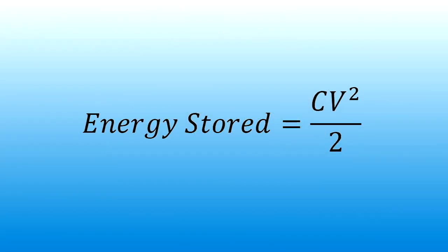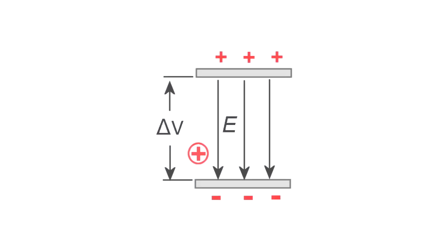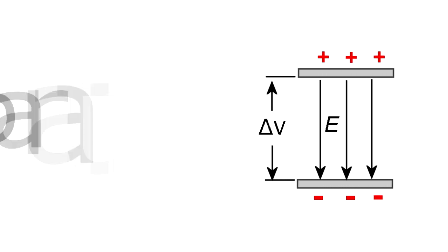I won't derive it, but the energy stored is equal to one half CV squared. That's one half the capacitance times the voltage squared. So it takes work to separate charge to a capacitor, and once separated, the capacitor stores energy.